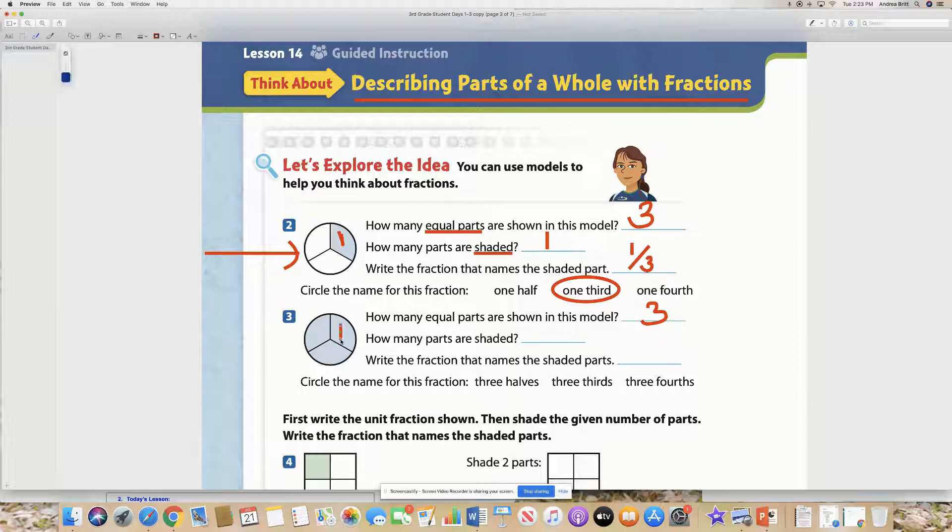Well, one, two, three. That's supposed to be a three. Three are shaded, so there are three shaded.